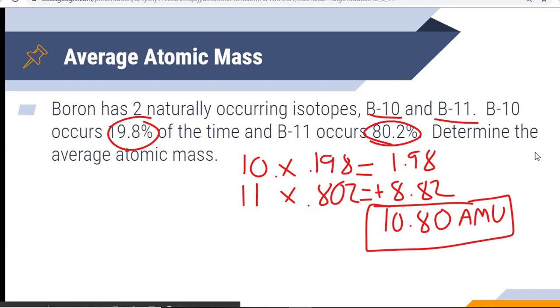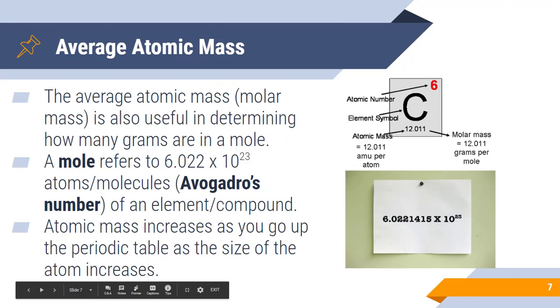Now, you may have some instances where you have three, four, five naturally occurring isotopes. The process is still the same. Take the mass and multiply by the abundance. Now, sometimes this will give you a mass that's a little more detailed than just 10. You may see some decimal places. You would just use that number as well.